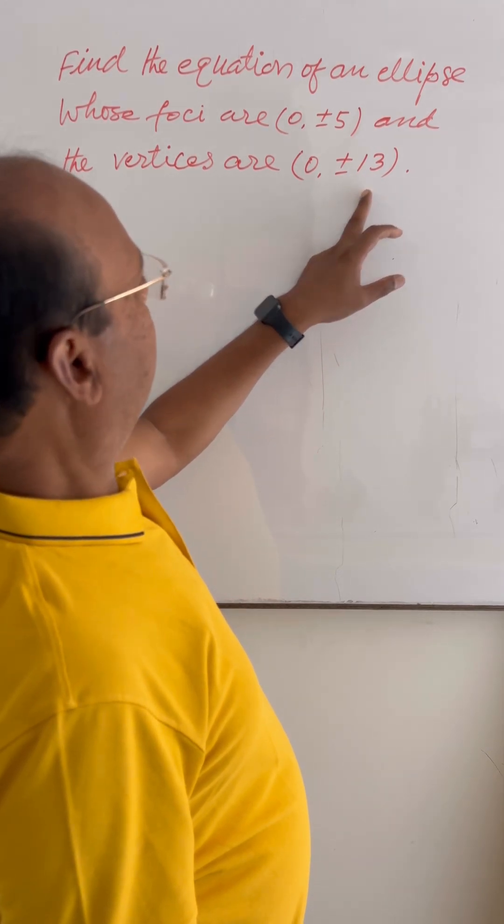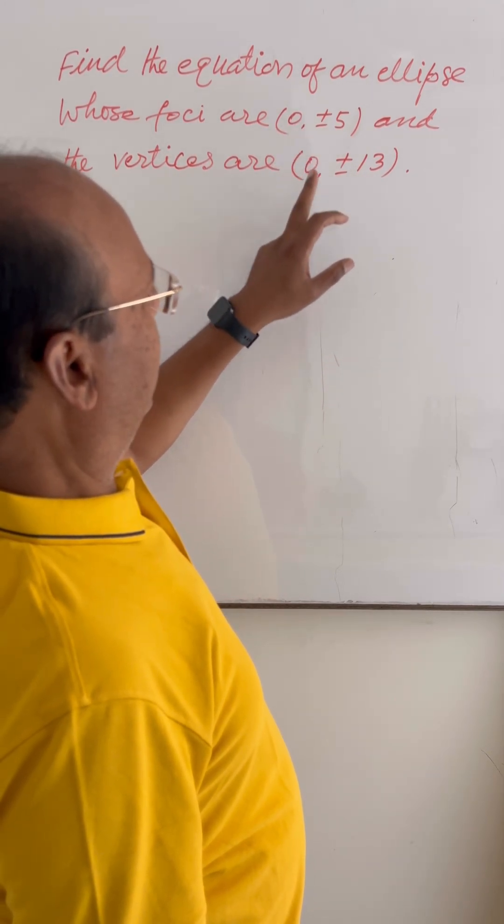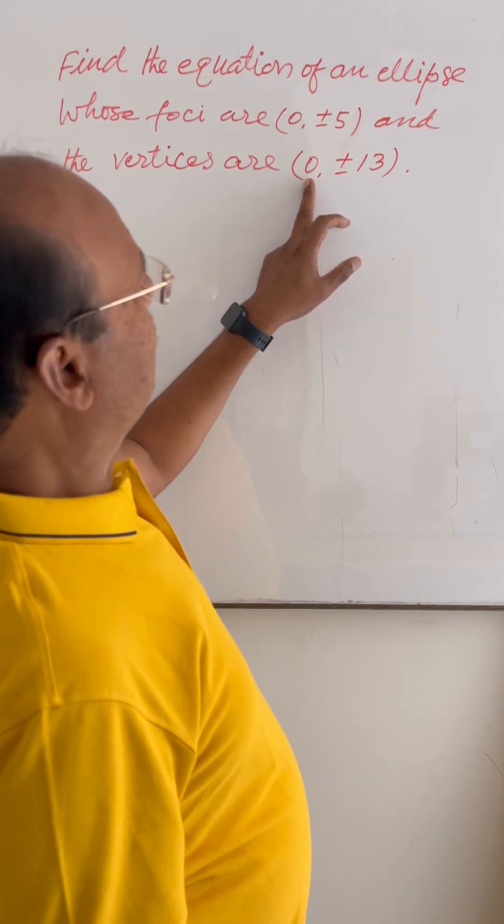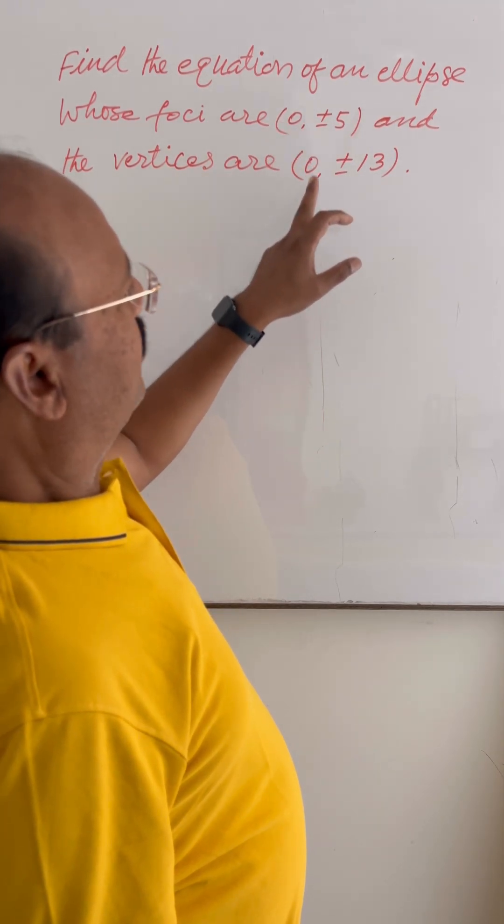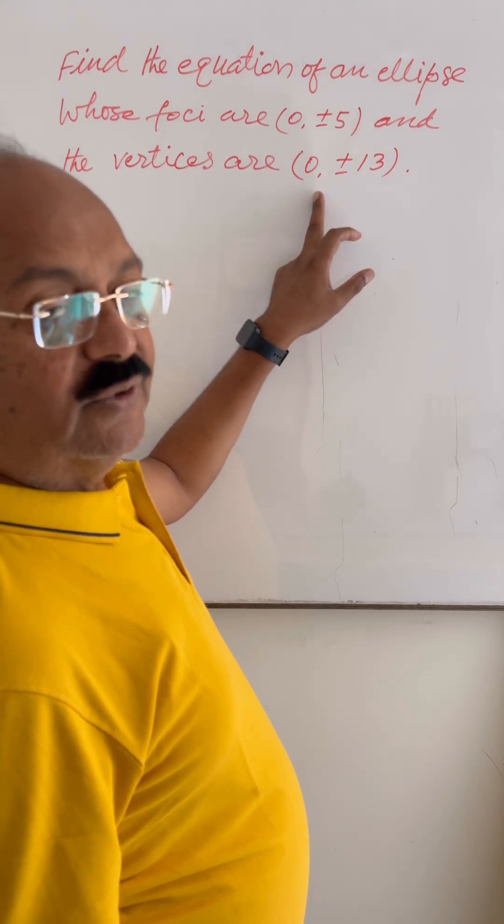Here in this case, x-coordinates of foci and vertices are 0. It means the foci and vertices are lying on the y-axis.